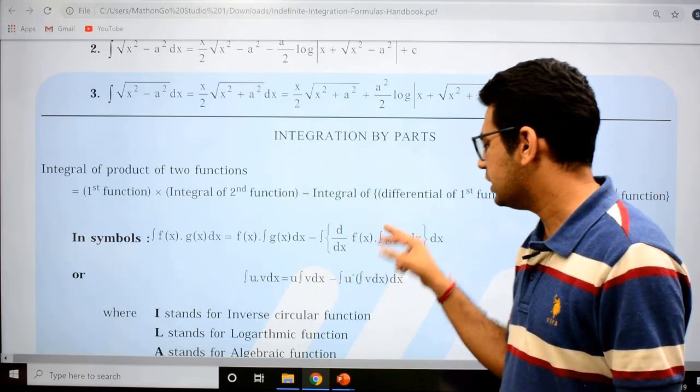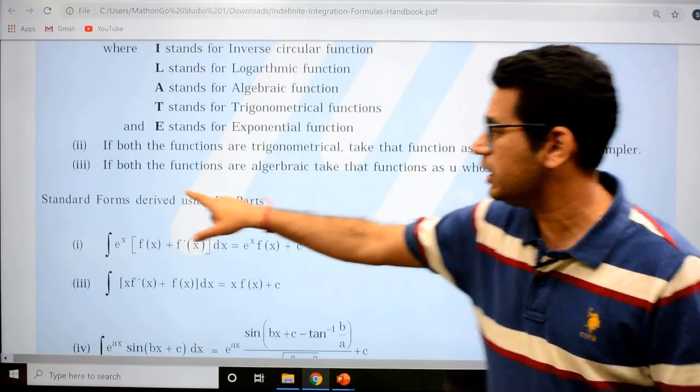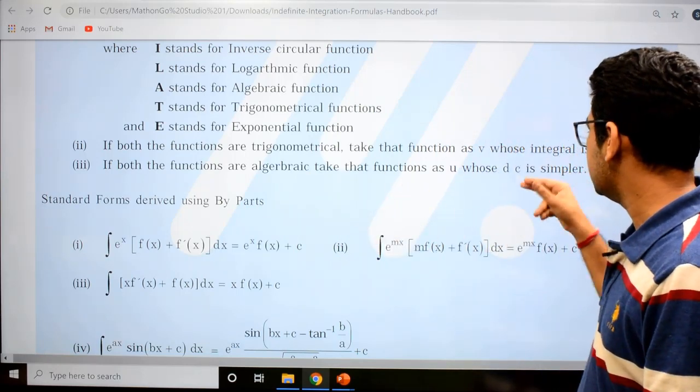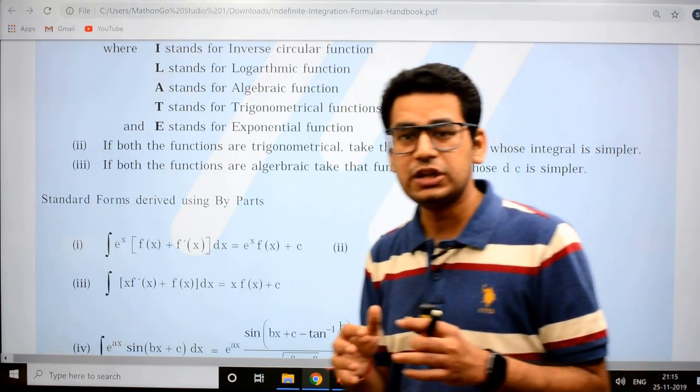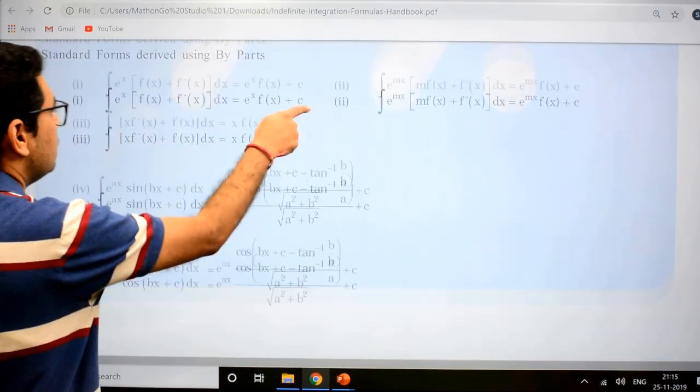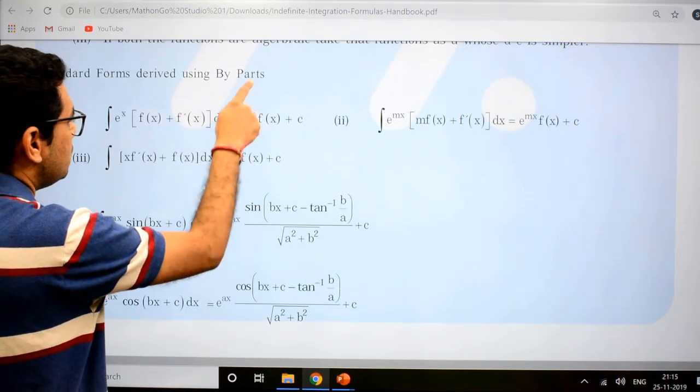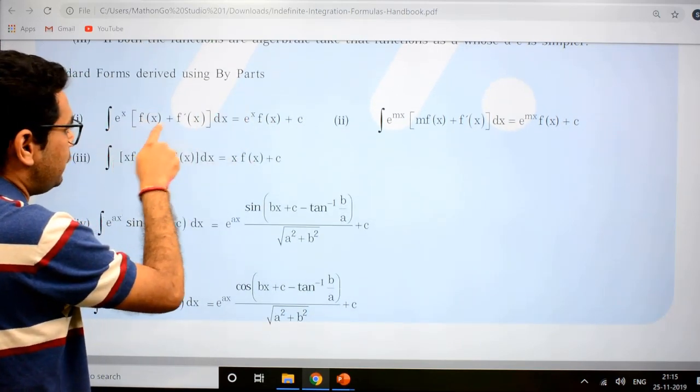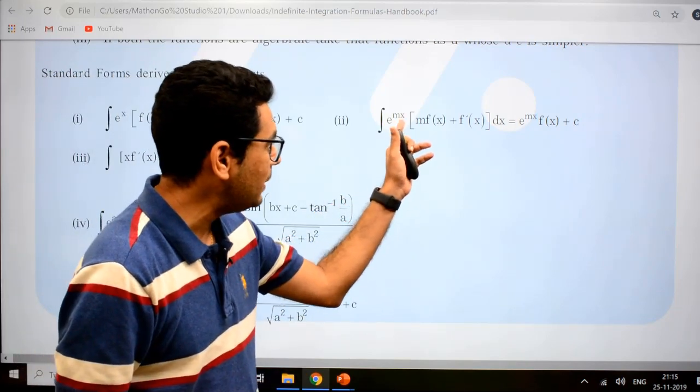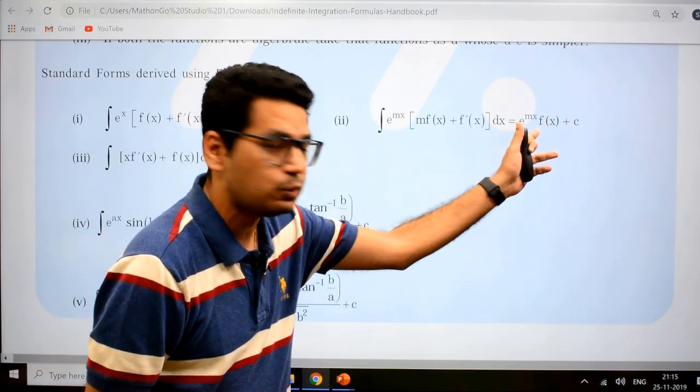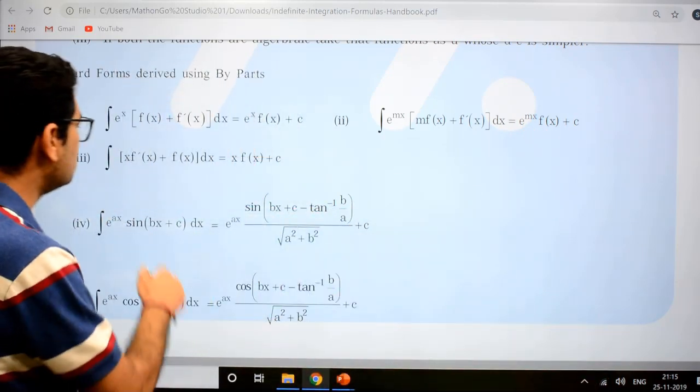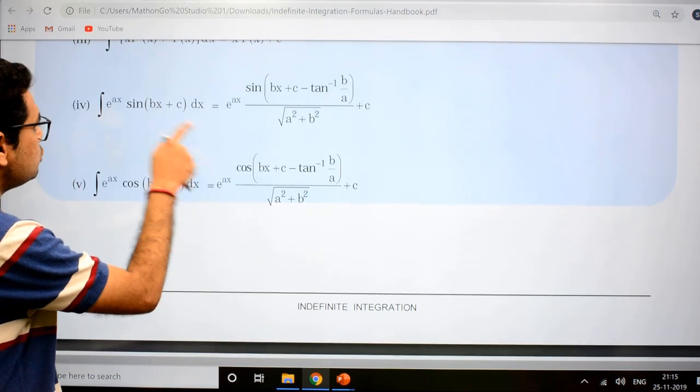Then integration by parts - basic is there, but we've explained the ILATE rule. We've also explained if both functions are algebraic, take the function as u whose derivative is simpler. Everything is written here clearly. You just have to go through and revise that. Plus, formulas which are derived using by parts. So e^x times [f(x) + f'(x)]. You've heard this before, but there's another format: e^(mx) times [m·f(x) + f'(x)] = e^(mx)·f(x) + c. Directly usable, so you can use it.